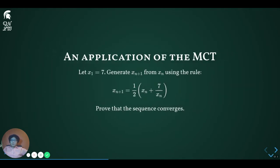Let us now give a somewhat more realistic application of the monotone convergence theorem. Remember, part of the goals for this week is describing methods with which we can prove a sequence to be convergent, even if we don't have a good guess what its limit should be. As frequently happens when designing an algorithm for numerical methods, we can generate a sequence recursively. Our sequence is generated by the following rules: x1 is set to be 7, and x sub n+1 is generated from x sub n by setting x sub n+1 equal to one half the sum of x sub n with 7 over x sub n.